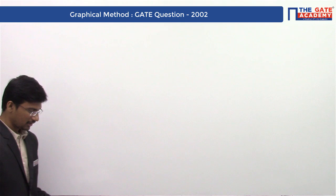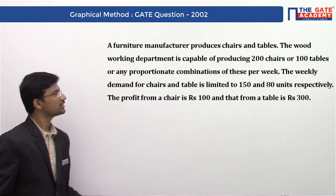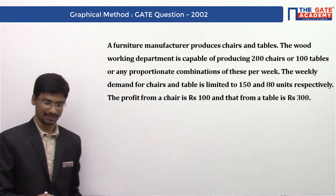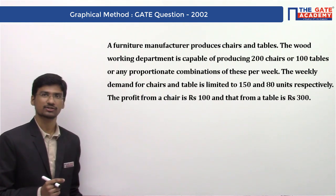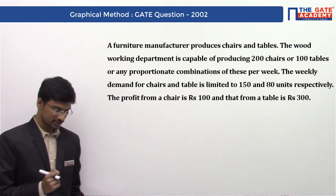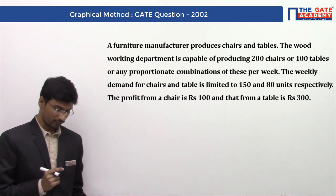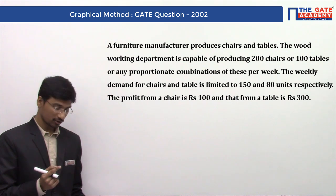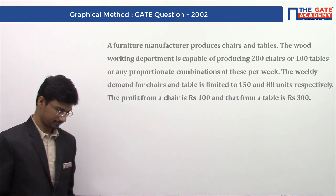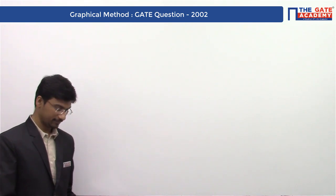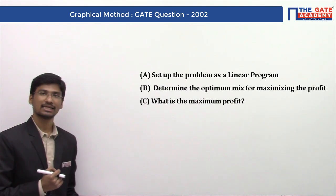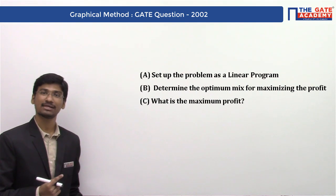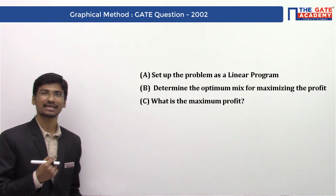The question goes like this: if an HR manufacturer produces chairs and tables, the woodworking department is capable of producing 200 chairs or 100 tables or any proportionate combinations per week. The weekly demand for chairs and tables is limited to 150 and 80 units respectively. The profit from a chair is Rs 100 and from a table is Rs 300. They are asking us to: first, set up the problem as a Linear Programming problem; second, determine the optimal mix for maximizing the profit; and third, what is the maximum profit?